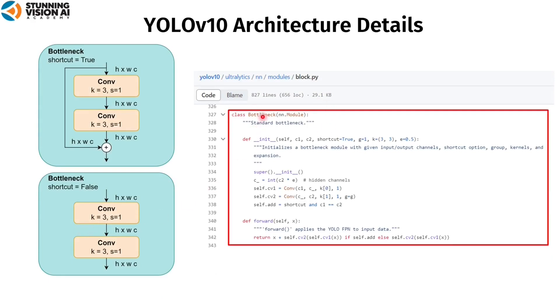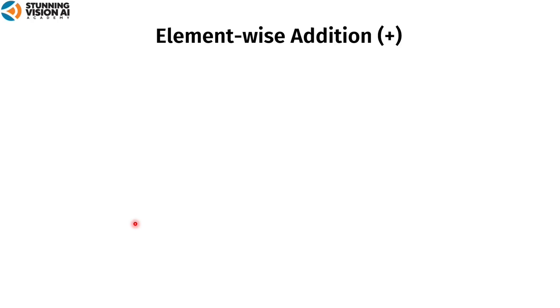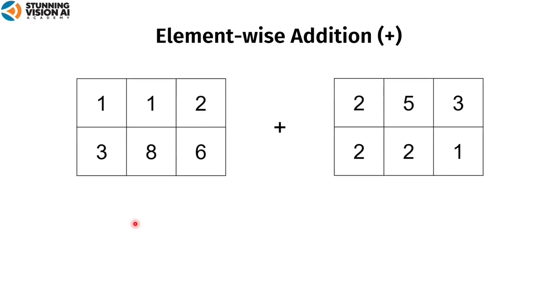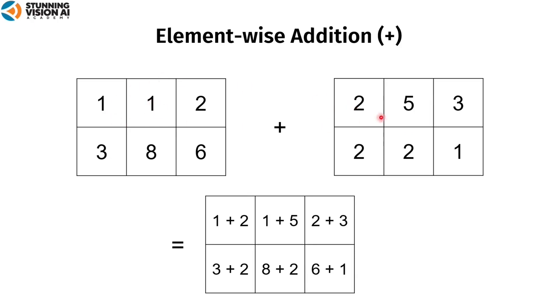In the C2F block, there is a bottleneck block based on the bottleneck class in block.py. There are two kinds: one that uses shortcut and one that doesn't. If a shortcut is used, the bottleneck has two parallel lines — the main line and the skip connection line. The main line has two convolutional blocks with kernel sizes 3 and stride 1, while the skip connection passes input directly to output. The results are added using element-wise addition. If no shortcut is used, it consists of only two conv blocks. In PyTorch, the plus operator performs element-wise addition between two tensors of the same size.